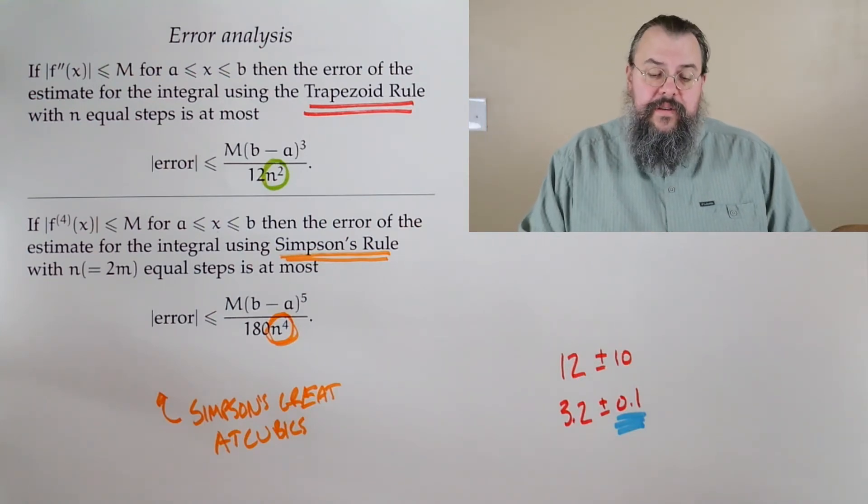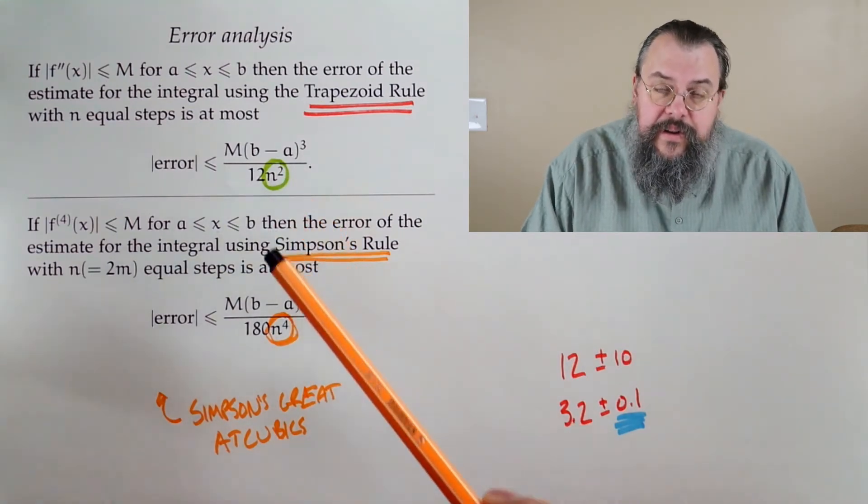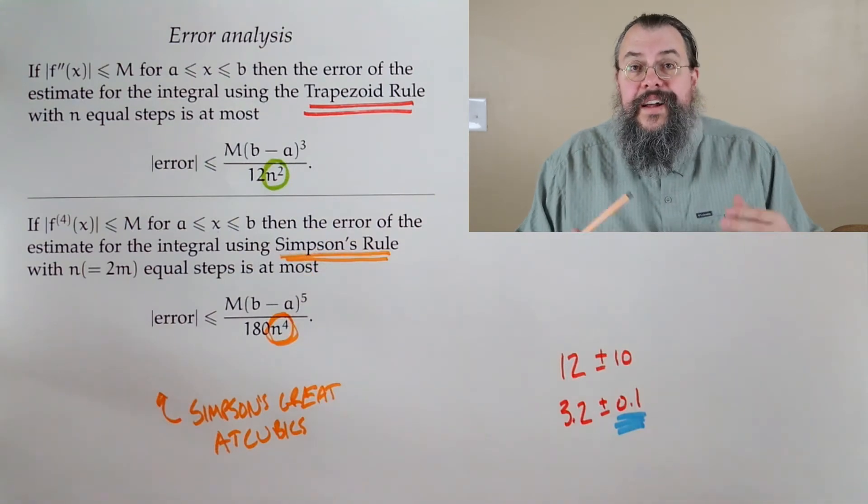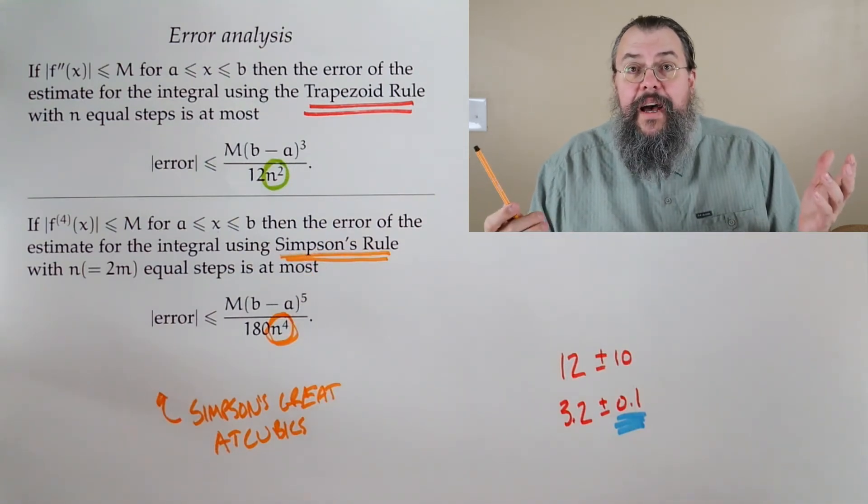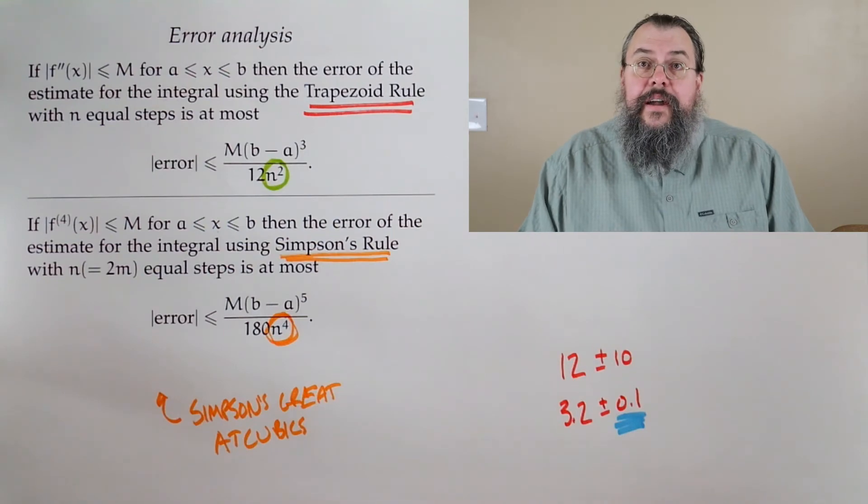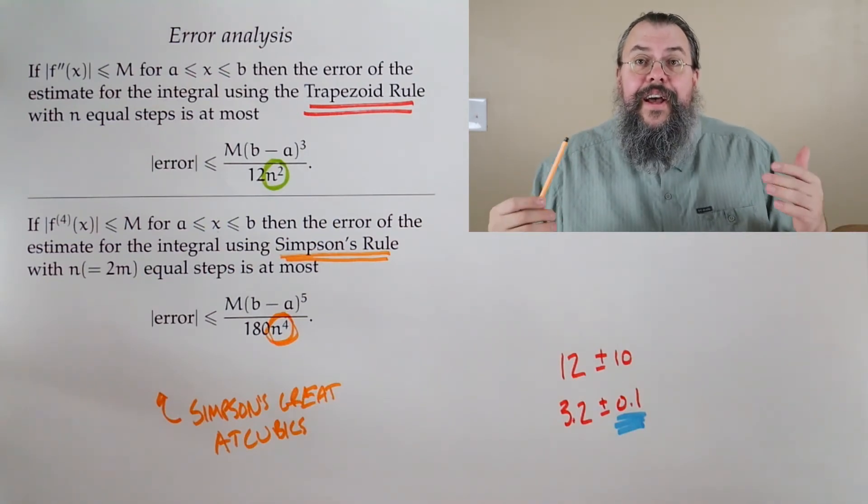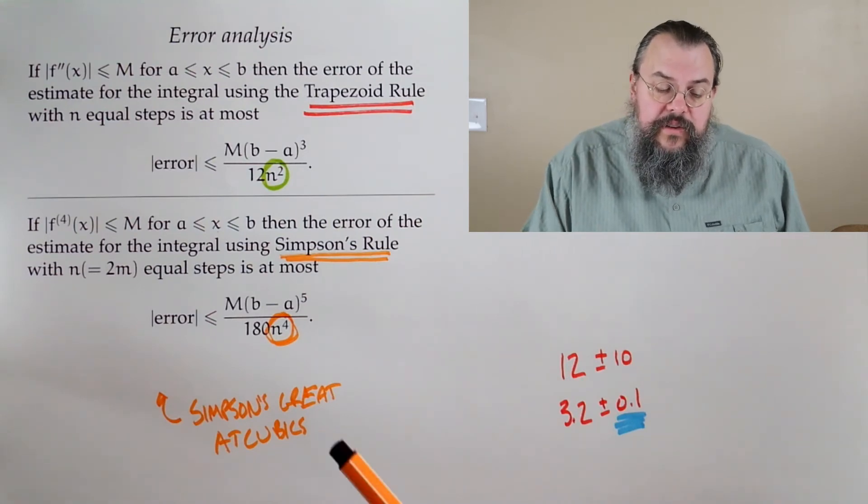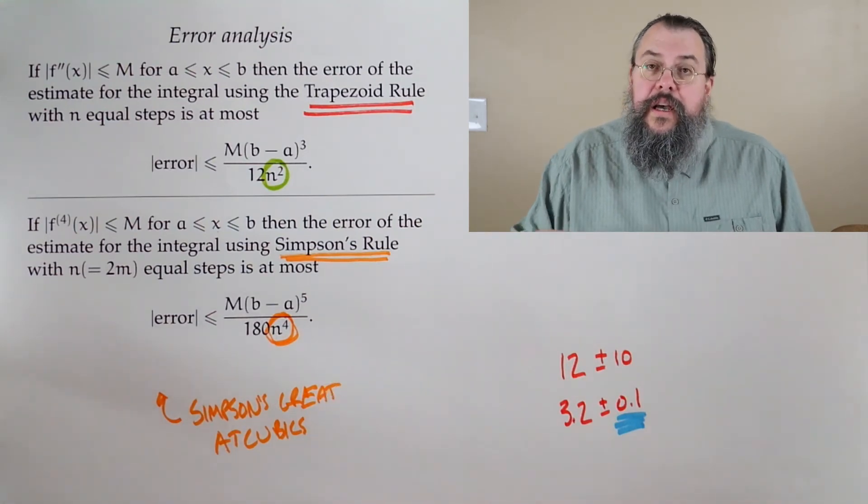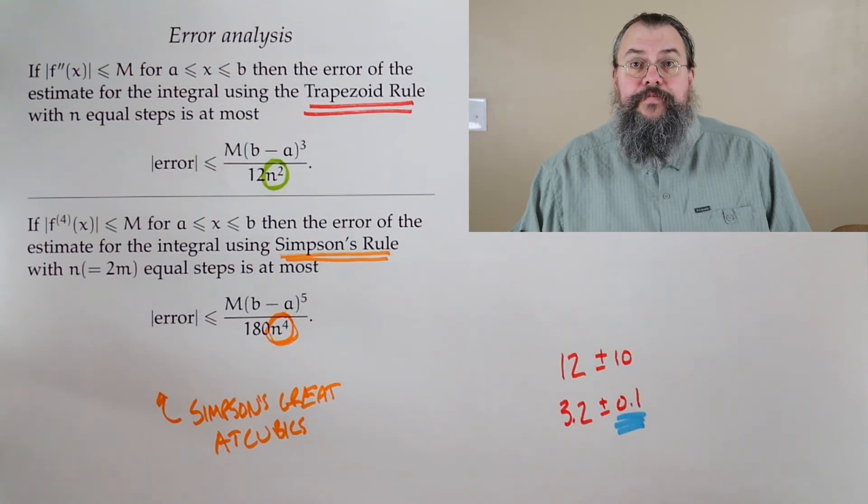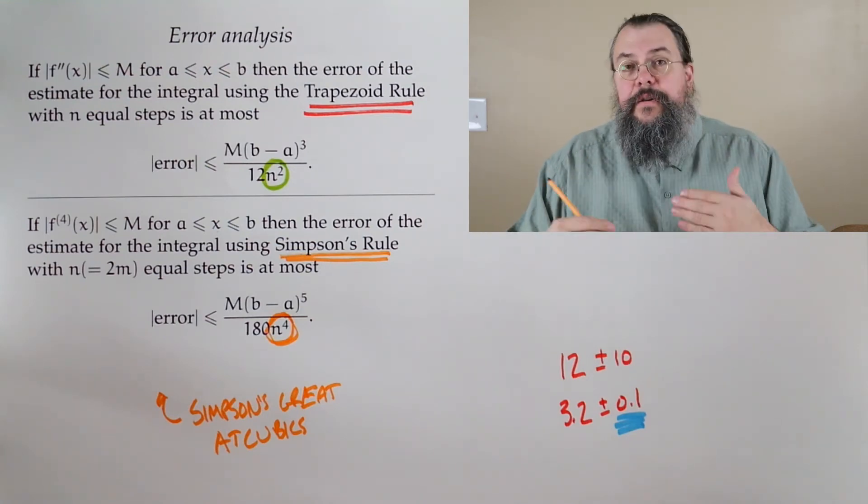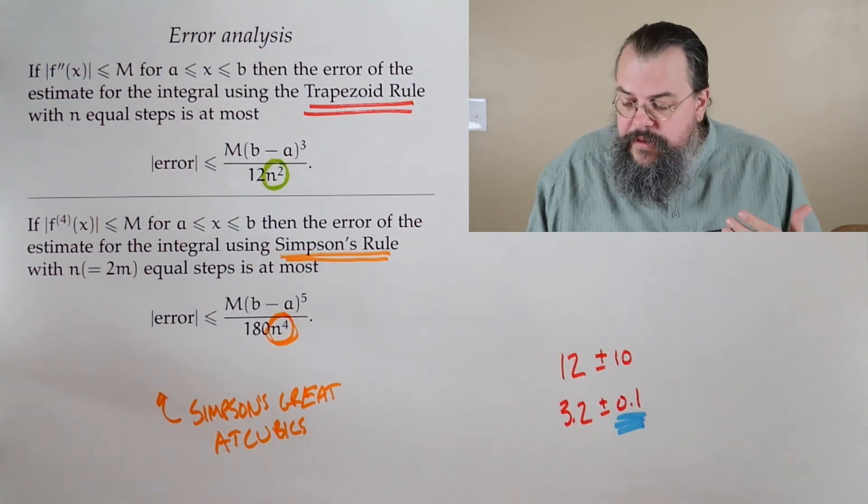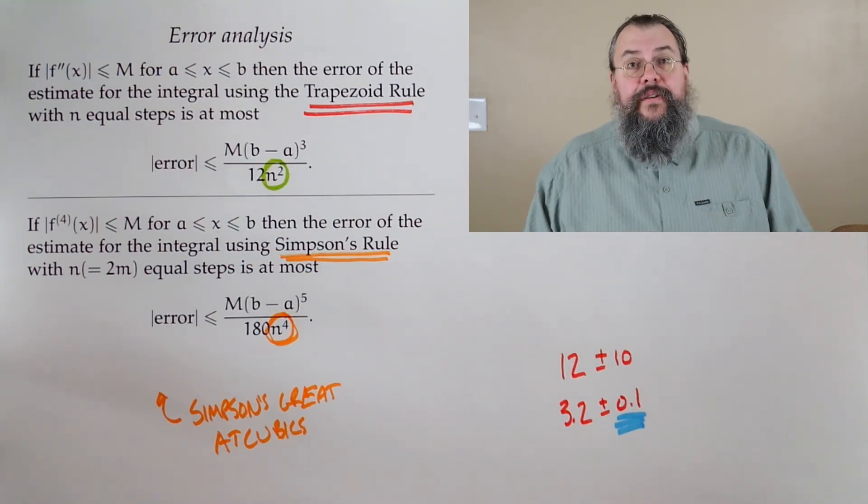But the beautiful thing is, compare n to the fourth versus n². So if you take 10², that's a hundred. It's not bad. If you take 10 to the fourth, that's 10,000. And again, that's driving it down much faster. So it says, Simpson's rule is really a much faster approach to understanding what's going on. So in some sense, this is why we say, look, Simpson's rule is a better way to approximate.